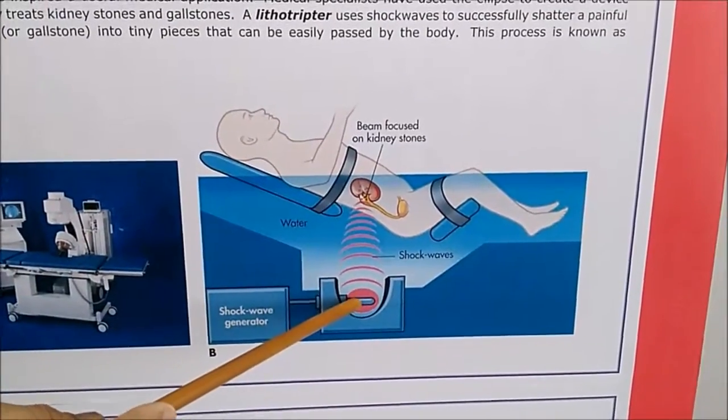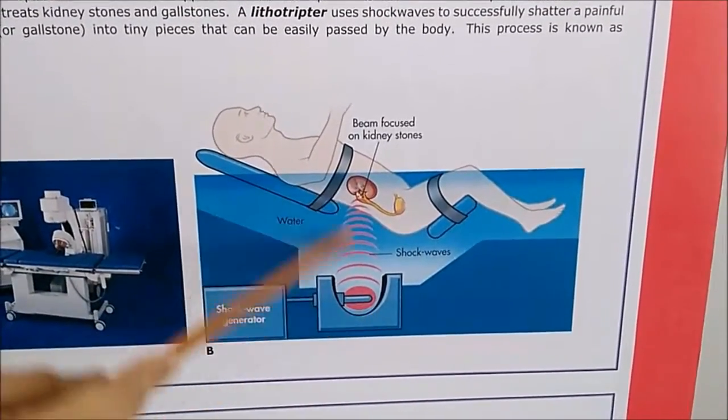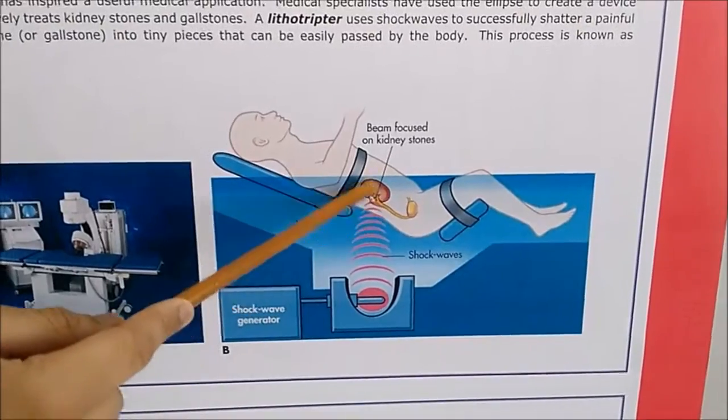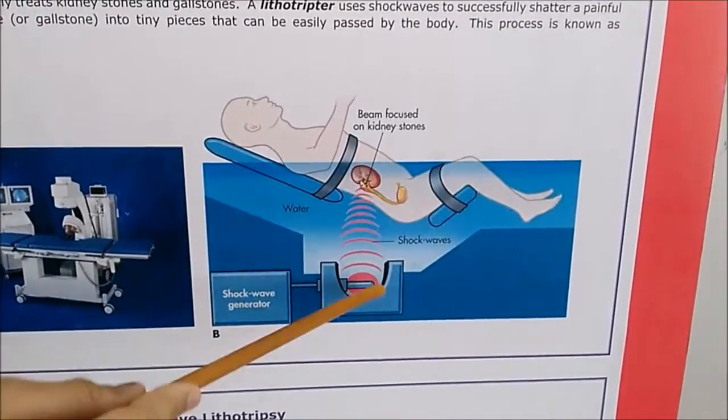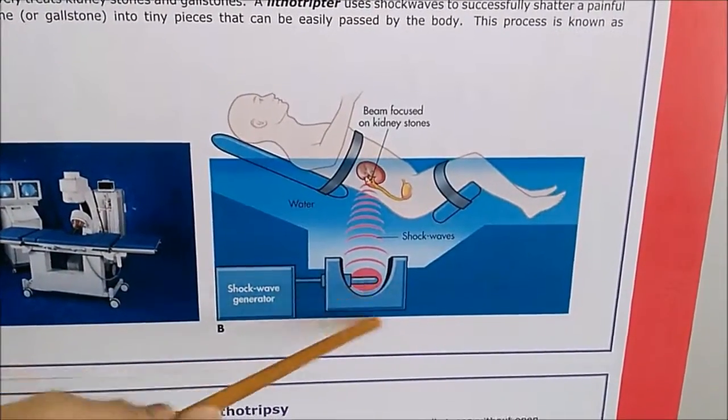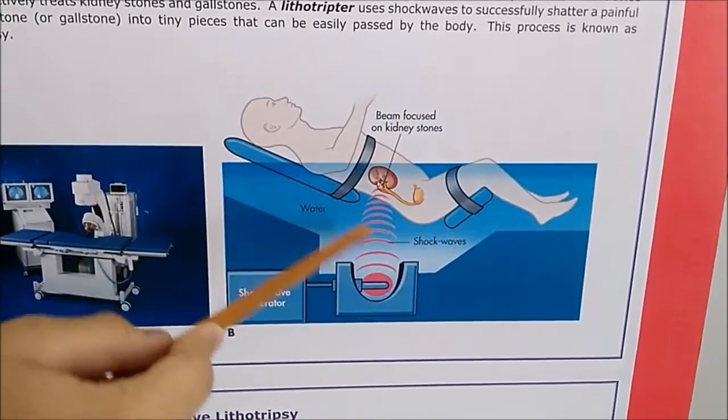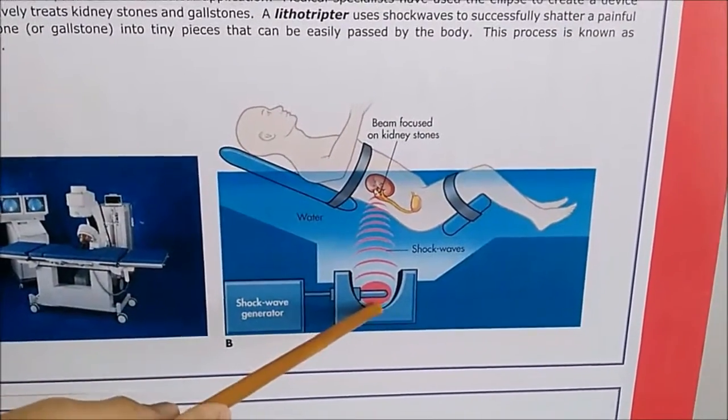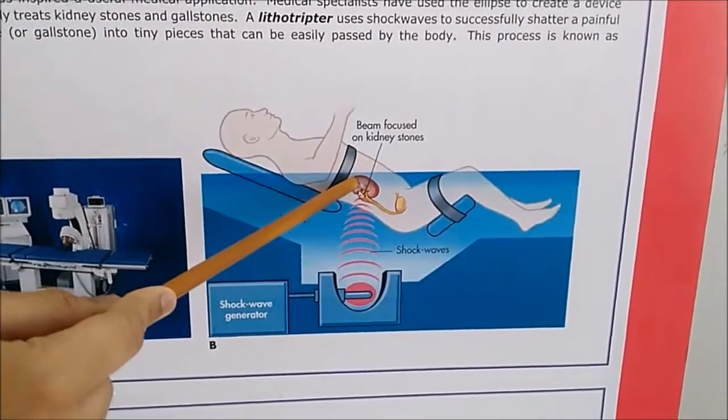So the shock wave generator can be put directly under the kidney stone. This acts as one focus whereas the kidney stone acts as the next focus. So the shock waves are passed from here to here which breaks the kidney stone.